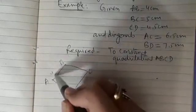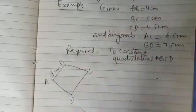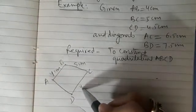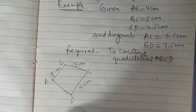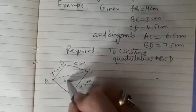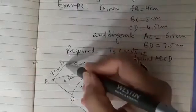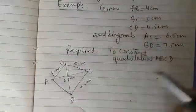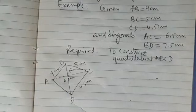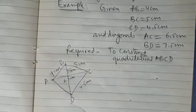Now AB is given to be 4 cm, then BC is 5 cm, then CD is given to be 4.5 cm. And the diagonal AC is 6.5 cm and the diagonal BD is 7.5 cm. Now we will be observing this rough sketch and we will see how we can do the construction.